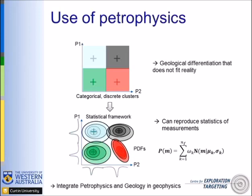Now, use of petrophysics. In the past, some people have done petrophysical-geological differentiation, assuming that if you have a point in a crossplot between property two and property one, you belong to one cluster — which is not necessarily true. You can be in the blue cluster but still have a probability to belong to the black one or the red one. The idea of reproducing statistics is to account for this possibility. Petrophysics is formulated as a sum of normal distributions that reproduces the statistics inferred from the crossplot using data acquired in boreholes or on the field.